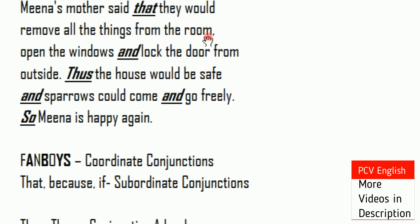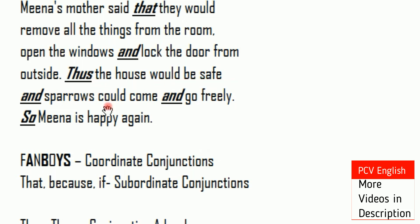From the story: 'They would remove all things from the room and open the windows.' Here 'and' is a Coordinate Conjunction. 'Lock the door from outside' — 'so' is a Conjunctive Adverb. 'The house would be safe and the sparrows would come and go freely.' So Meena is happy.